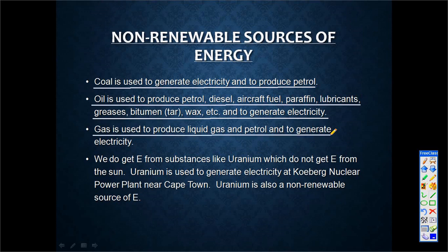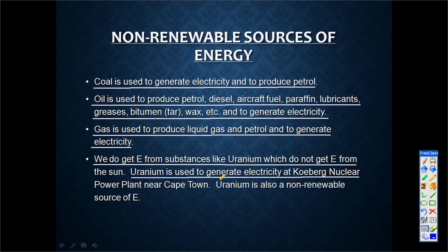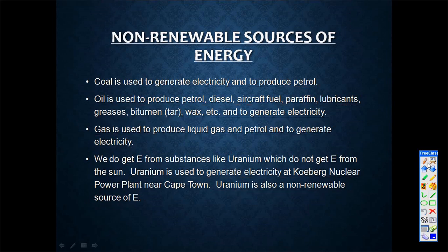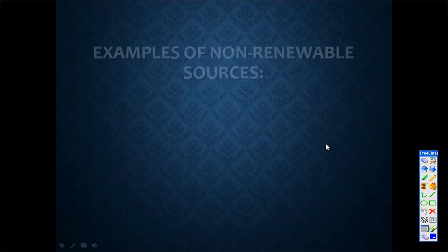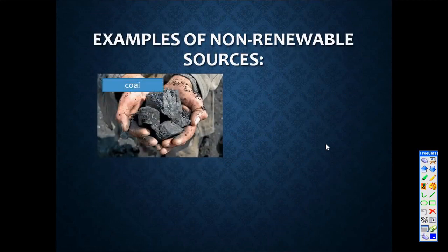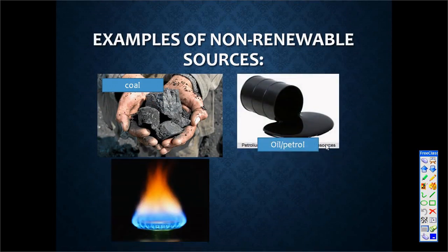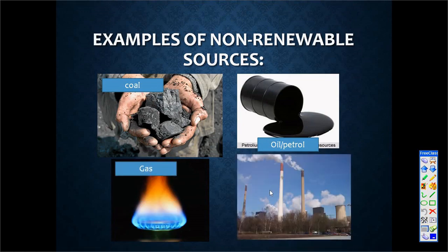Fossil fuels are a non-renewable source of energy, meaning that when we have used them, we cannot use them again — they cannot be restored naturally. Uranium is also a non-renewable form of energy. Uranium is a nuclear fuel used at Koeberg, the only nuclear power plant in South Africa, located near Cape Town, which uses uranium as a fuel to supply us with electricity. Examples of non-renewable sources of energy are coal, crude oil, natural gas, and nuclear fuels.